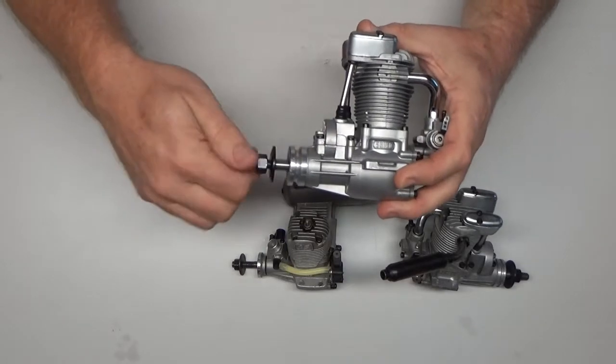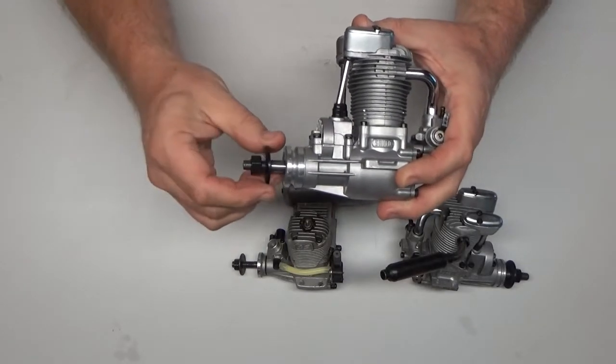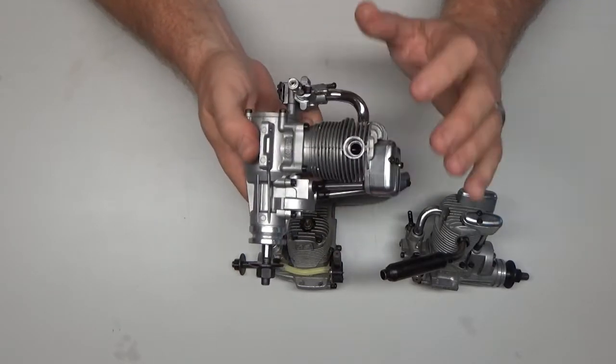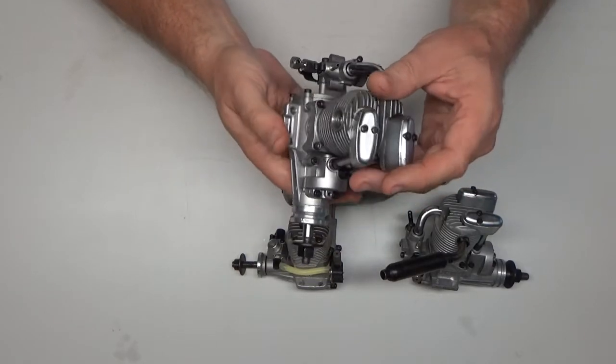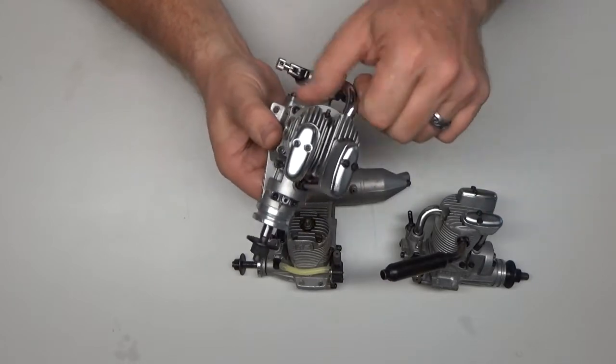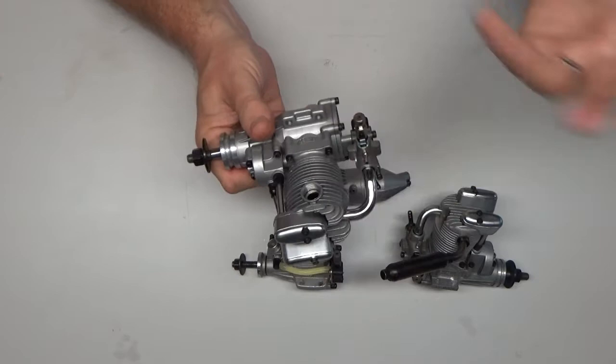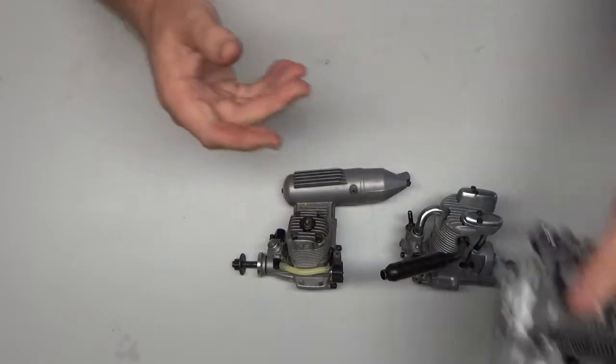So this engine has a new intake manifold and new bearings and brand new prop nut and washer, prop washer. So this engine is ready to go. It did not come with an exhaust but we'll talk about that also in a second. I've got exhaust that I can share, I don't have an exhaust for every engine I've got unfortunately but like I said we'll discuss that a bit further here.